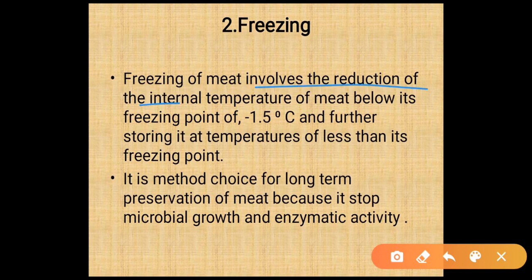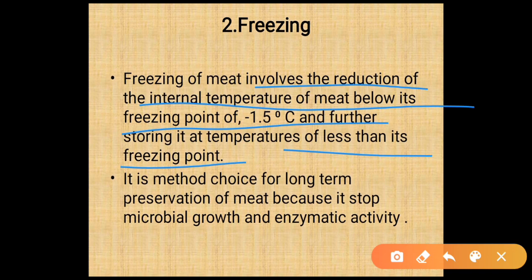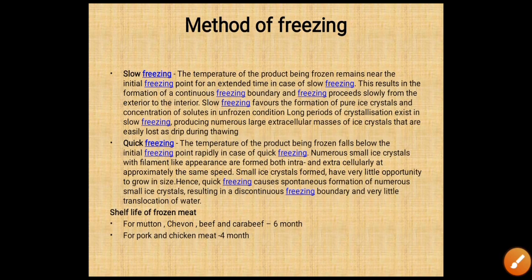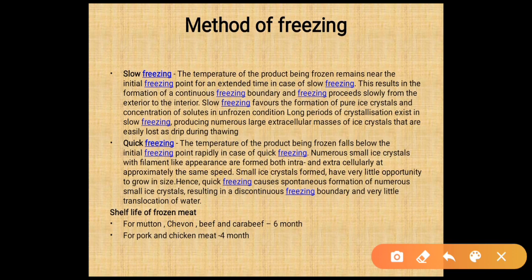Freezing involves a reduction of the internal temperature of meat below minus 1.5 degrees Celsius. It is the method of choice for long-term preservation because it stops microbial growth and enzymatic activity. There are two methods: slow freezing and quick freezing. In slow freezing, the product temperature remains near the initial freezing point for an extended time, resulting in freezing proceeding slowly from the exterior to the interior.